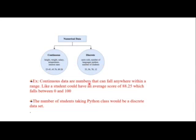Continuous data consists of numbers that can fall anywhere within a range. For example, a student could have an average score of 88.25, which falls between zero and 100 — this is a best example for continuous data. For discrete data, the number of students taking a Python class would be a discrete data set.